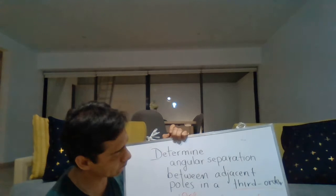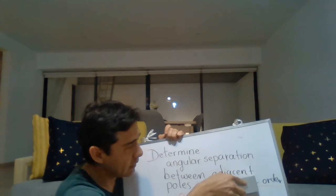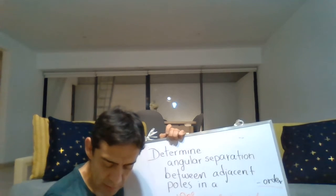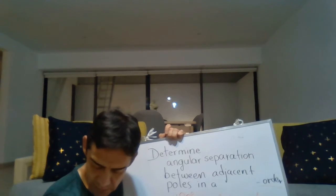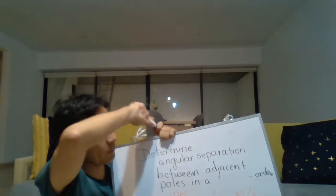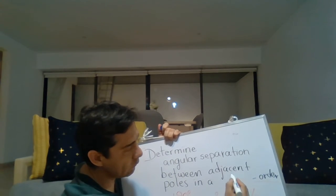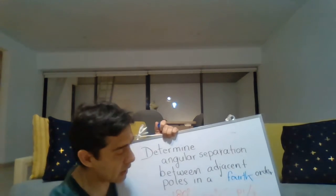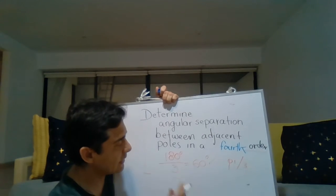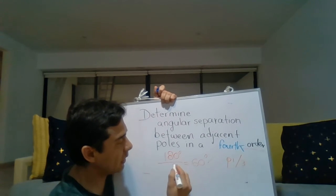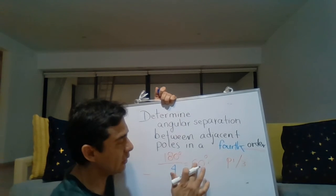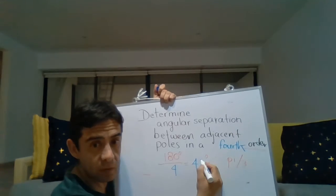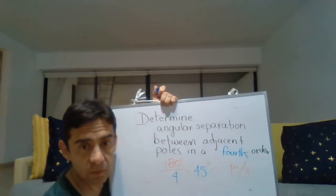Let's say instead of having a third-order filter — either low-pass or high-pass — now you have a fourth-order filter. In that case, the correct answer is 180 divided by 4. So the final answer will be 45 degrees.